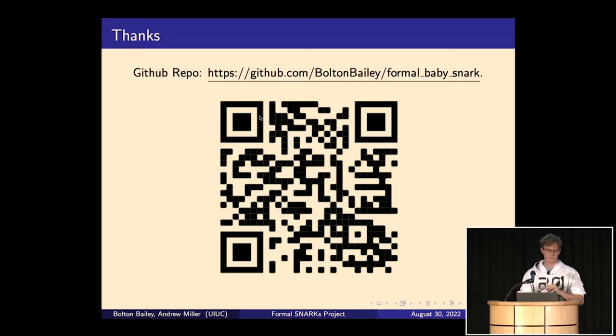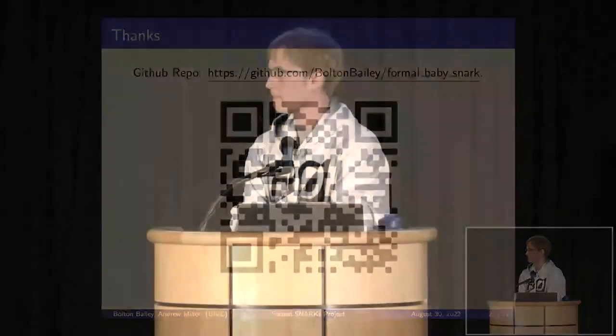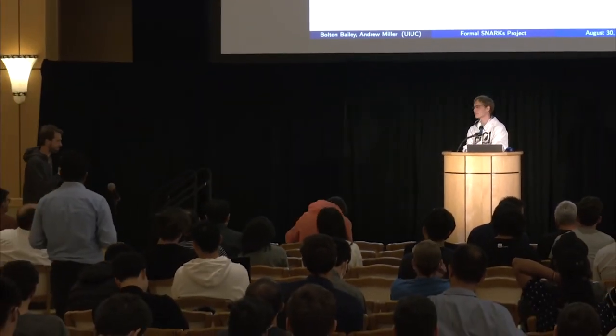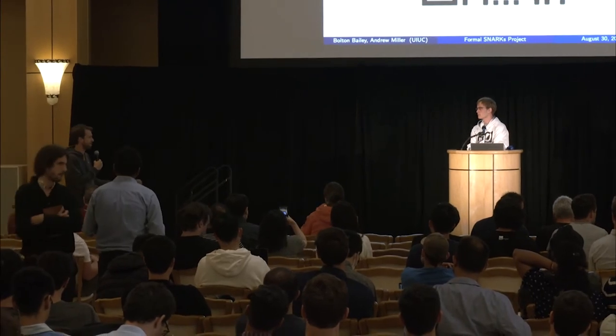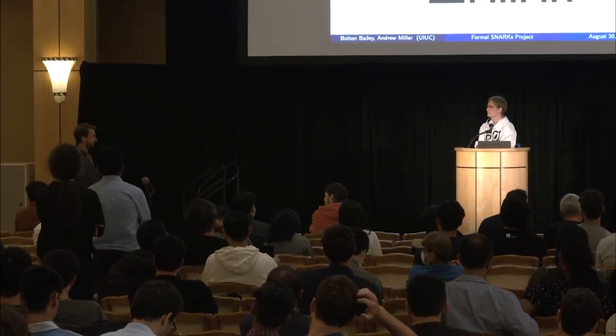We have a few minutes for questions. So for me this paper was kind of a breath of fresh air, proving that it could be done for Groth16. My question is: how much effort is it to learn how to use the tool, and how painful is it to apply it to these proof systems? And how much more work do we need to get, for example, Plonk and STARKs?